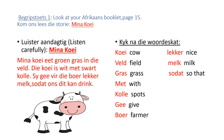Mina Kui. Mina Kui eet groen gras in die veld. Die Kui is wit met swart kolla. Sy gee vir die boor lekker melk, so dat ons dit kan drink.